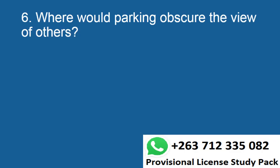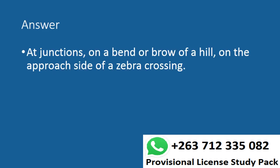Question 6. Where would parking obscure the view of others? Answer. At junctions, on a bend or brow of a hill, on the approach side of a zebra crossing.